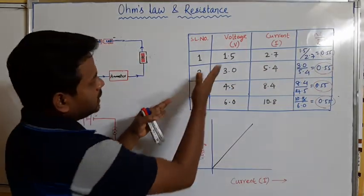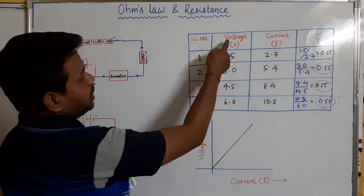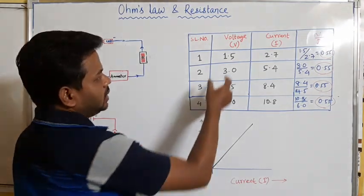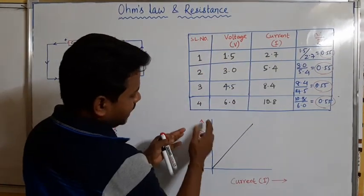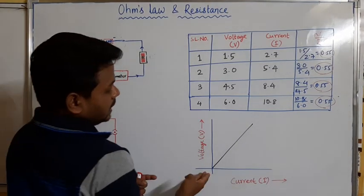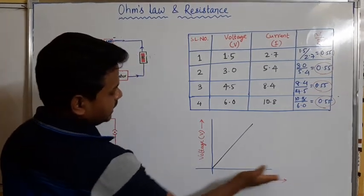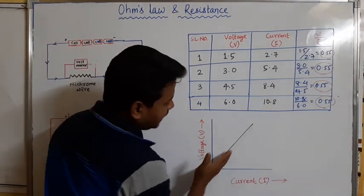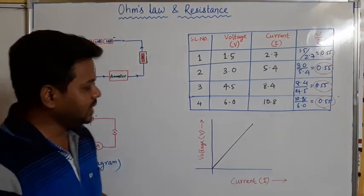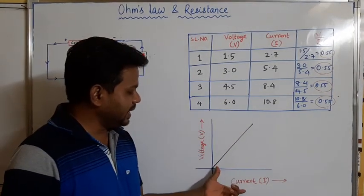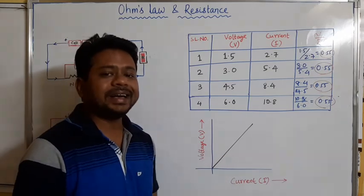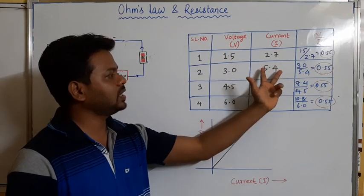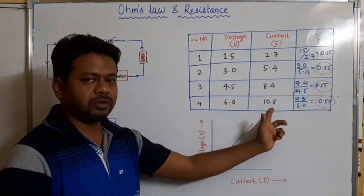If you do a graph between voltage and current — voltage is the other name of potential difference — taking current on the x-axis and voltage or potential difference on the y-axis, you will get a straight line. This means voltage and current are directly proportional to each other: if you increase the voltage then the current also increases by a similar amount.